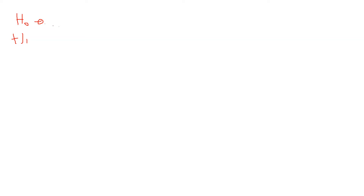H0 is the null hypothesis. H1 is the alternate hypothesis. The null hypothesis is the hypothesis that says the drug does not work — the drug makes no difference between two or more groups. The alternate hypothesis says that the drug does work, that it causes a statistically significant difference between the two groups.